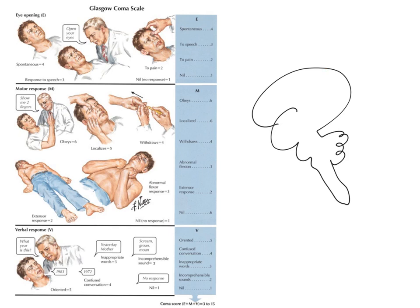Eye-opening in response to pain gives only a score of two, and this is more of a subcortical reflex activity. This could indicate quite severe damage to the cortex, but reflex activity remains at subcortical and brainstem levels, where a painful stimulus comes in through the trigeminal nerve and reflexly causes the facial nerve to activate the muscles that open the eyelids. The worst response — a one — can be caused by severe brainstem damage whereby the motor nuclei that would normally open the eyelids are completely destroyed.